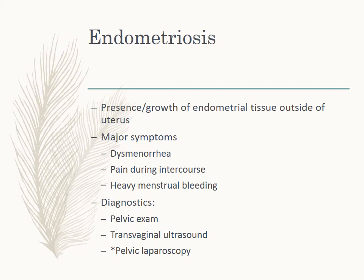Endometriosis is the presence and growth of endometrial tissue outside of the uterus. The major symptoms are dysmenorrhea, pain during intercourse, and heavy menstrual bleeding. We're going to need to do a pelvic exam, a transvaginal ultrasound, and possibly a pelvic laparoscopy. That endometrial tissue contains glands, and when it implants outside of the uterus, it can implant anywhere — even in the lungs. Each time the woman goes through her cycle, it's like mini cycles throughout her body — bleeding and sloughing off. It causes extreme pelvic pain, pressure, and inflammation to adjacent organs, and it can cause adhesions to form — to the bladder, to the bowel.